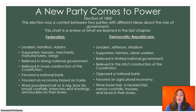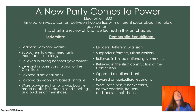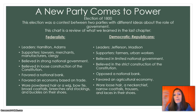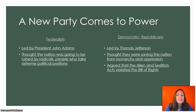So a new party comes to power — it's the election of 1800. This election was a contest between two parties with different ideas about the role of government. This is the same chart we used in the last chapter, Chapter 9, to look at the difference between the Federalists and the Democratic Republicans. The Federalists are led by President John Adams, and they thought the nation was going to be ruined by these radicals — people who take extreme political positions — and that's how they viewed the Democratic Republicans.